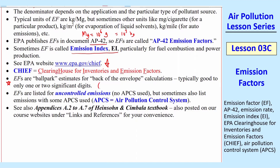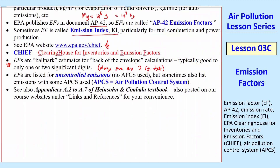In this course, we will always give our answers to three significant digits, especially on quizzes. So you don't want to round off too much, but keep in mind these are really just ballpark estimates. The EFs are usually listed with no air pollution control system (APCS), but sometimes they're listed with one — so you've got to be careful. When there's no APCS, it's called uncontrolled emissions.